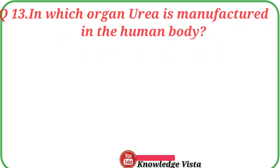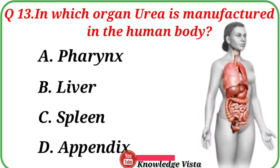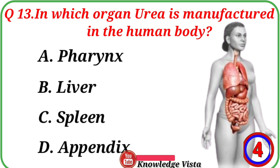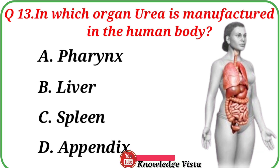Question No. 13: In which organ is urea manufactured in the human body? Your options are: A. Pharynx, B. Liver, C. Spleen, D. Appendix. Correct answer is Option B, Liver.